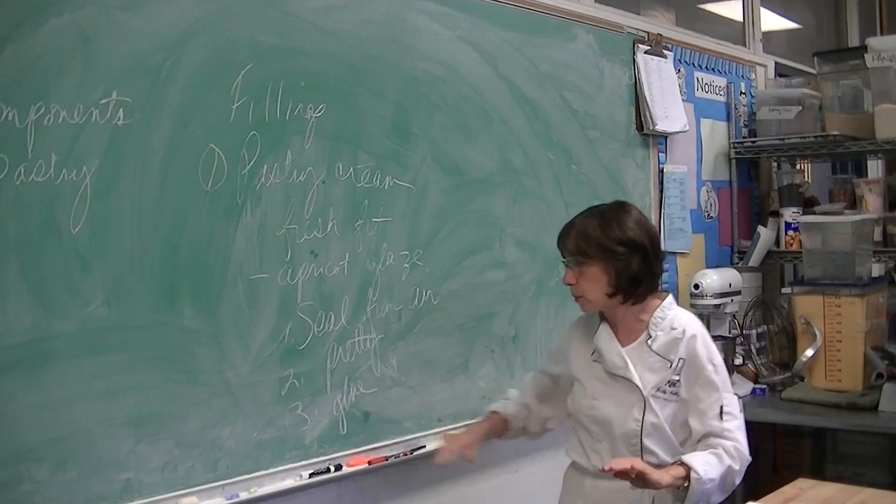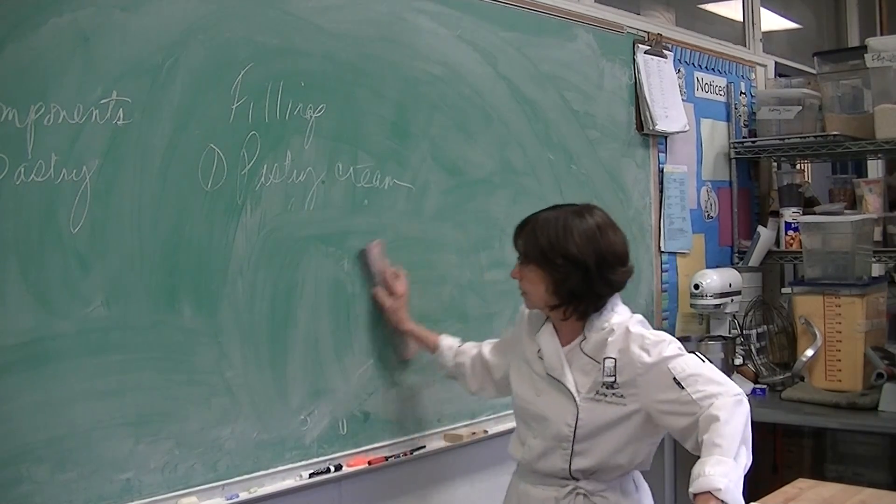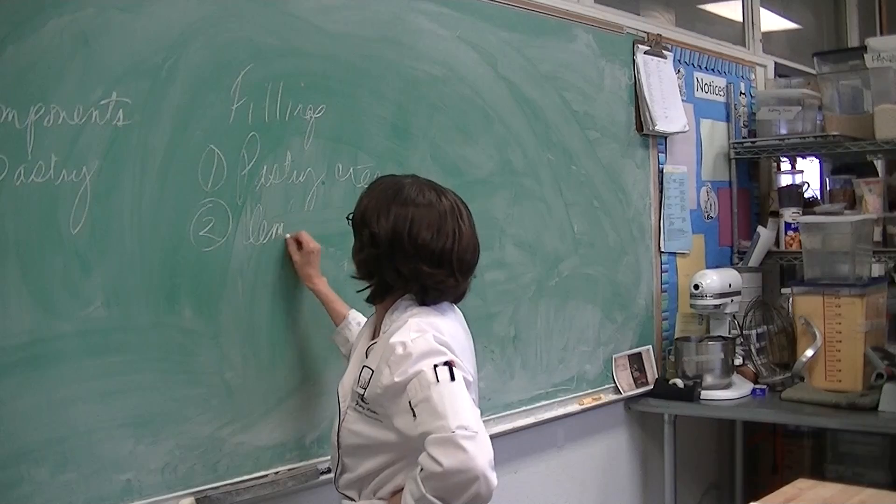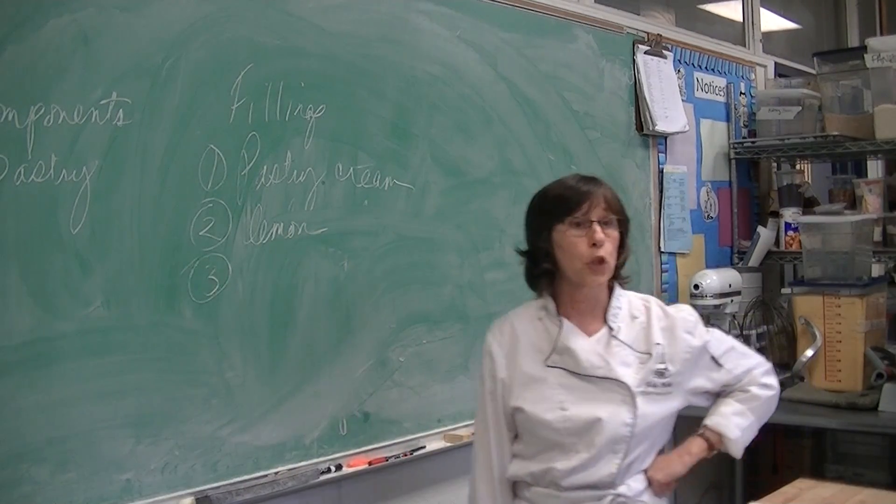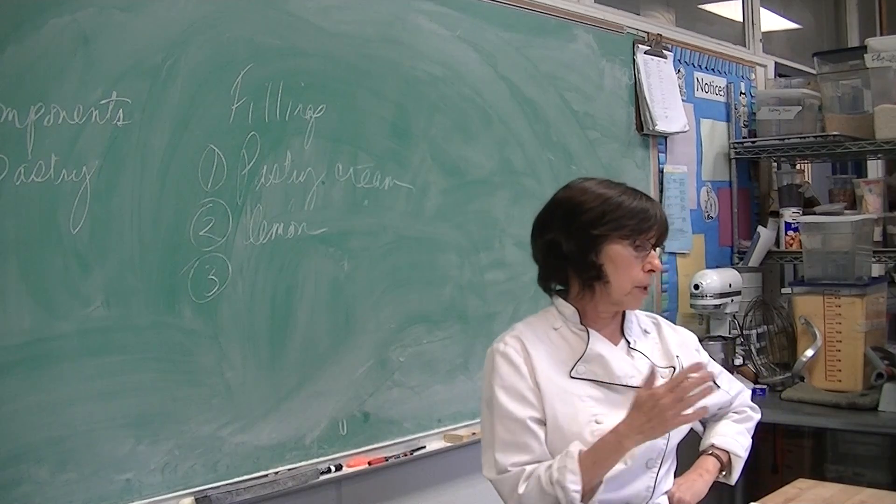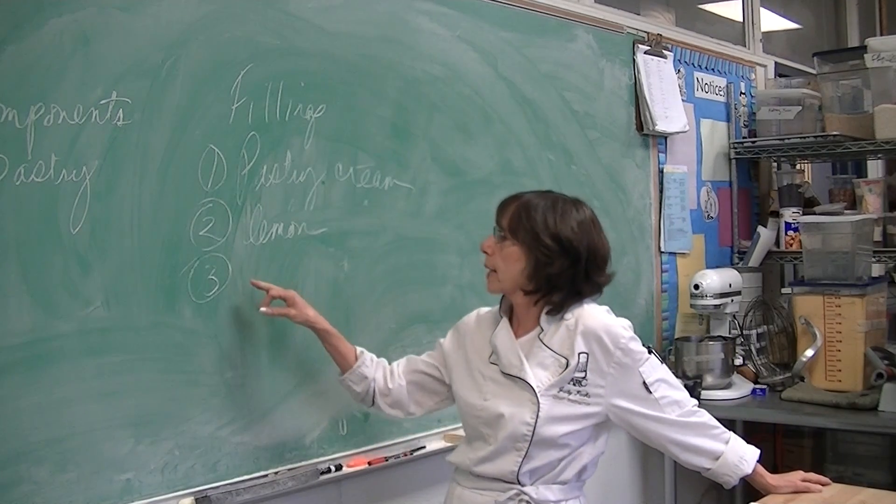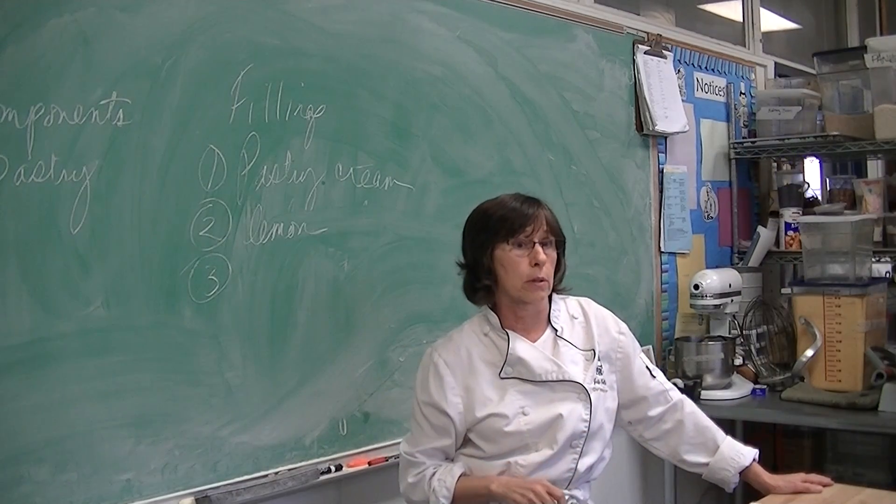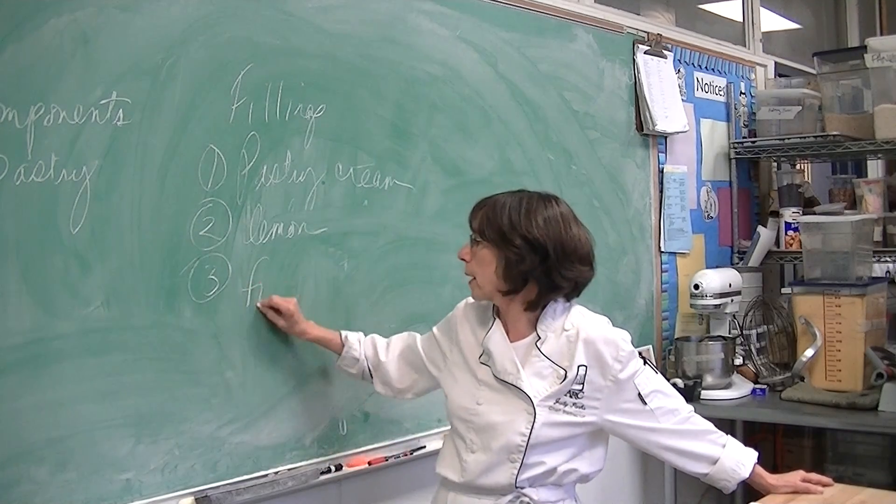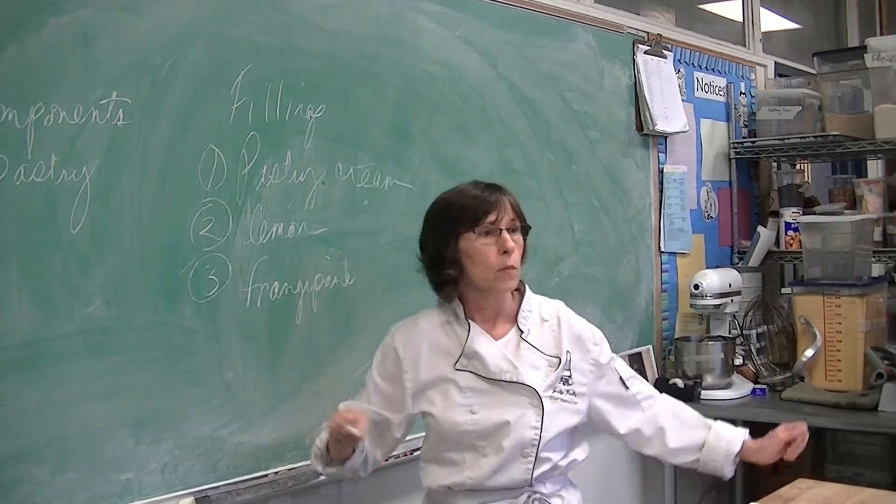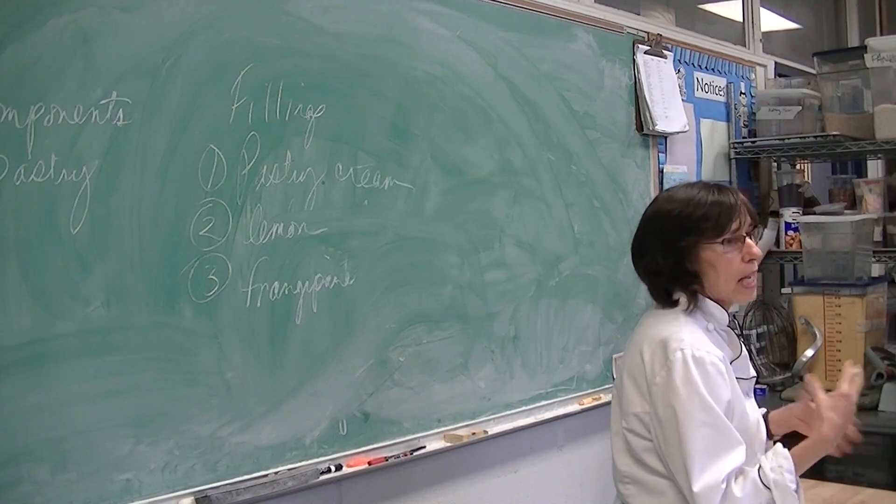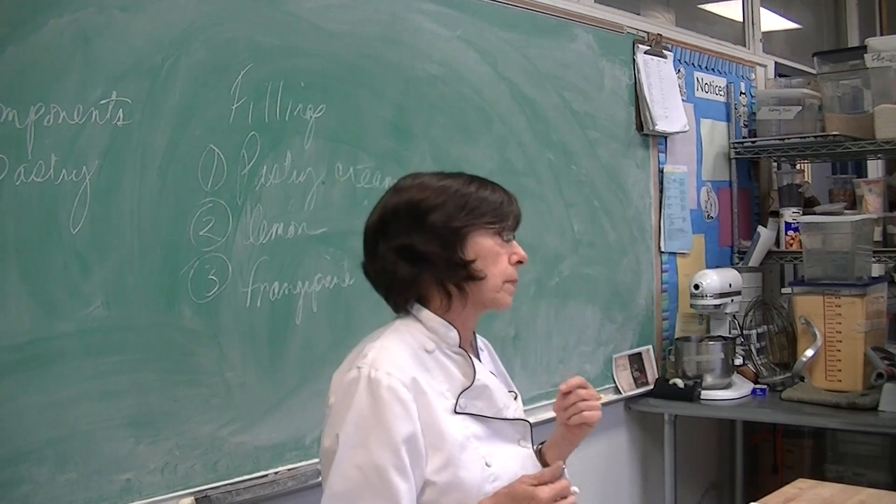Pastry cream is a real traditional filling. What else might you put in a tart? Lemon curd or lemon filling. You could do savory tarts, but you would not use the short dough that we have. You would use what is called pâte brisée, which doesn't have the sugar in it necessarily, the fat's usually cut in. Let's go back to sweets. We're just doing sweet today, but absolutely savory tarts. Tomato tart, goat cheese, all that. Frangipane is an almond paste mixture - almond paste, some eggs, a little bit of flour, some sugar. It's kind of like our bear claw filling.